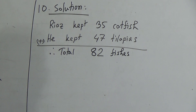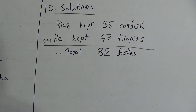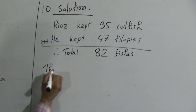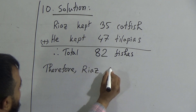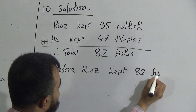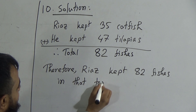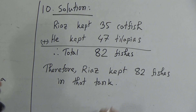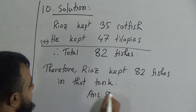After that, we should write down the words by arranging the language. The question is: how many fish did he keep in the tank? So we write: Therefore, Riyaz kept 82 fishes in the tank. That means in Riyaz's pond he kept 82 fishes all together. Our answer will be 82 fishes.